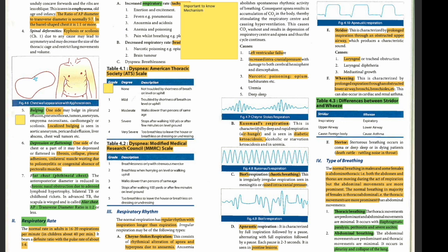Kussmaul breathing — remember the term 'air hunger' and you will never forget what it is. It is rapid and deep respiration. Happens in ketoacidosis — diabetic, alcoholic, and starvation. Biot's respiration is chaotic breathing seen in raised intracranial pressure, with no particular format. Apneustic respiration is not very frequently asked by examiners, but you must know it occurs in pontine lesions.